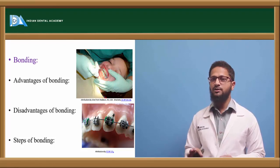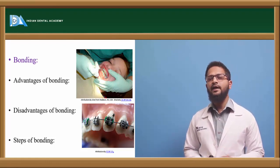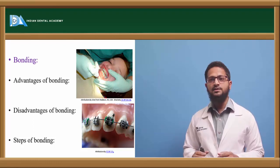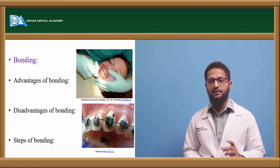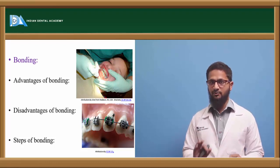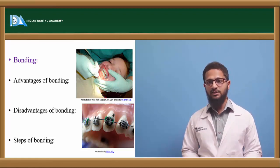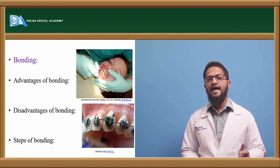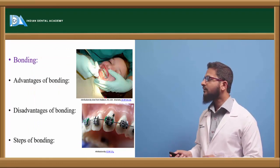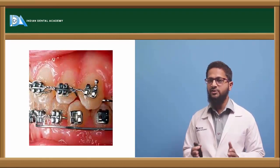The steps in bonding are: first, the tooth must be properly cleaned with a pumice brush. Then etching is done using 30 to 50% phosphoric acid for 45 to 60 seconds, applied on the tooth surface, then washed away. This gives a dull frosty appearance, which indicates etching is complete. The area must be totally isolated — no saliva contamination — and kept completely dry. After isolation, bonding agent is applied, and the attachment is fixed by placing the required amount of adhesive resin on the bracket base and placing it on the tooth surface. Excess material is removed and curing is done.